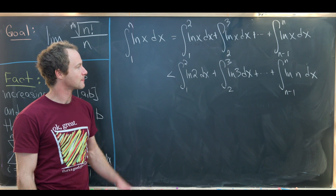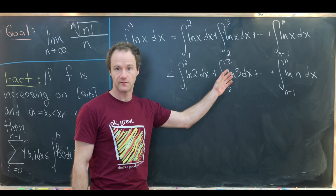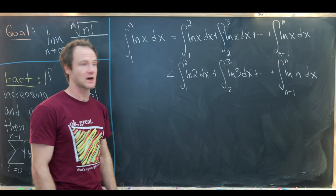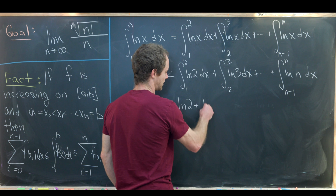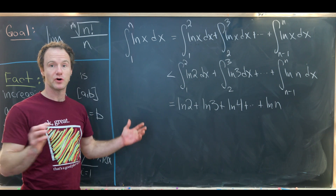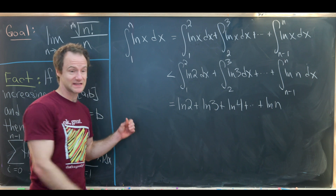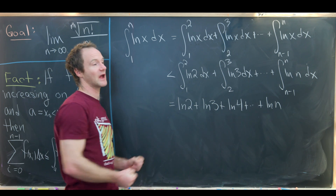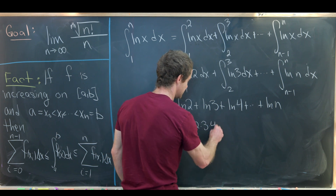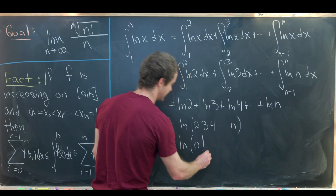We're integrating constant functions — ln(2), ln(3), ln(4), all the way up to ln(n) — over unit intervals, so those integrals just equal those constants. That gives us ln(2) + ln(3) + ln(4) + … + ln(n). Using the product rule for logarithms, a sum of logarithms becomes the logarithm of a product: ln(2 · 3 · 4 · … · n), which is the natural log of n factorial.